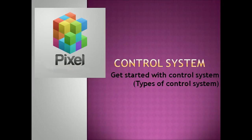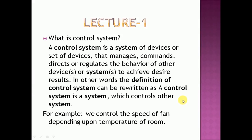Hello viewers, this is Pixel and today we are going to learn about the different types of control systems. A control system is a system in which different types of inputs are applied and the required result is achieved. As an example from daily life, we use a fan and regulate its speed depending upon the room temperature by using a regulator, which is a potentiometer. This system is also a type of control system.